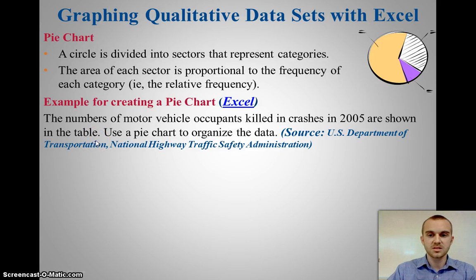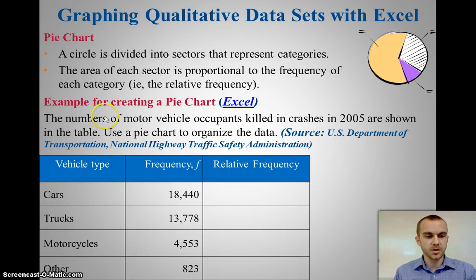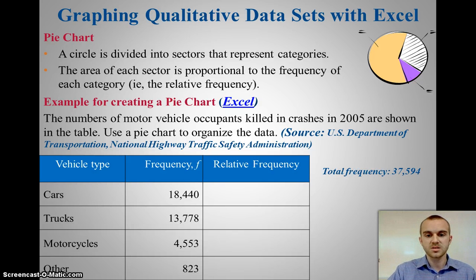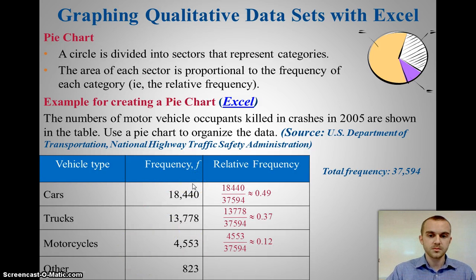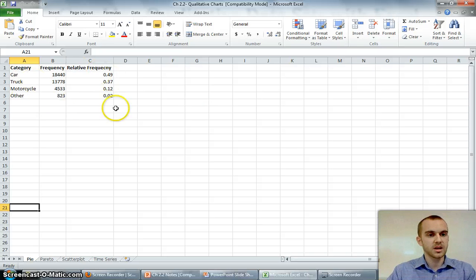So, let's look at an example here. Say the number of motor vehicle occupants killed in crashes in 2005 are shown in this table. And it has all the frequency information. Now, if I want to use a pie chart, I can use the frequency information, but it's much better to use the relative frequency to help me understand how much area will be of the circle for each category. So, that would just be taking the total frequency and dividing each of the individual ones by the total. Now, I'd want to actually graph this into my pie chart. So, I'm going to use Excel. So, here's my data.